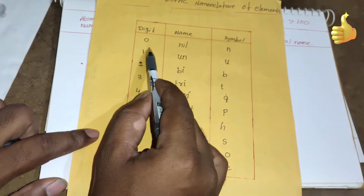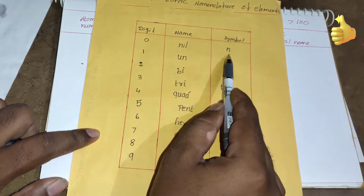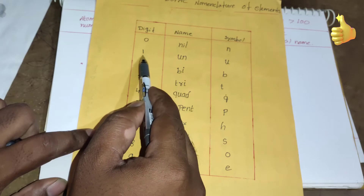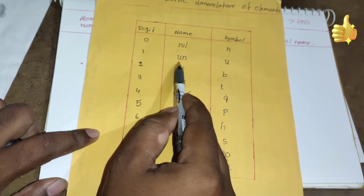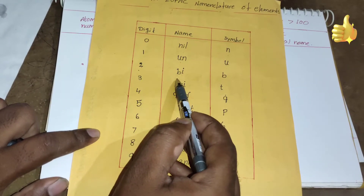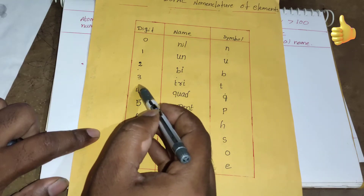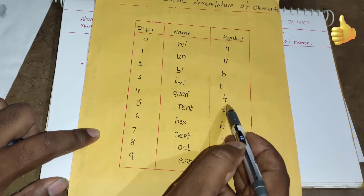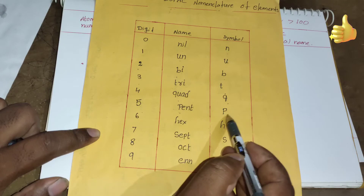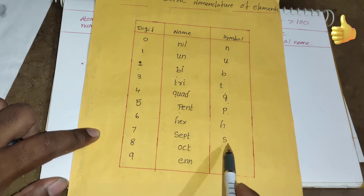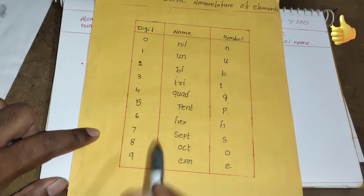The digit-to-name mapping is as follows: 0 = nil (symbol n), 1 = un (symbol u), 2 = bi (symbol b), 3 = tri (symbol t), 4 = quad (symbol q), 5 = pent (symbol p), 6 = hex (symbol h), 7 = sept (symbol s), 8 = oct (symbol o), 9 = enn (symbol e).